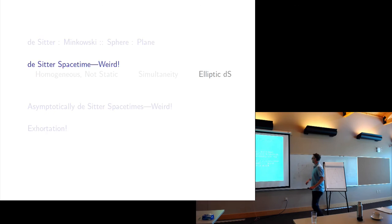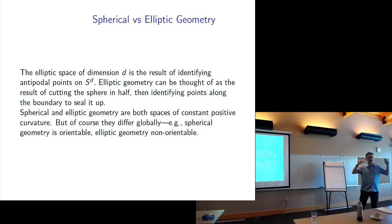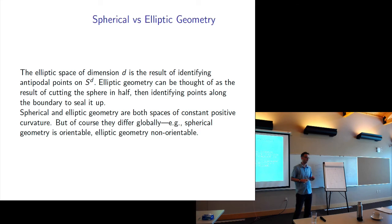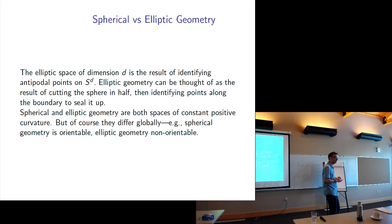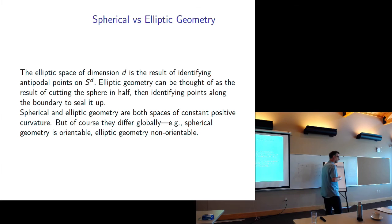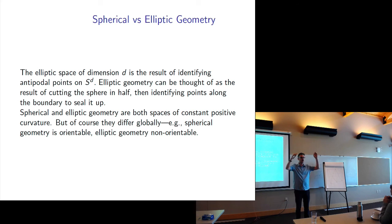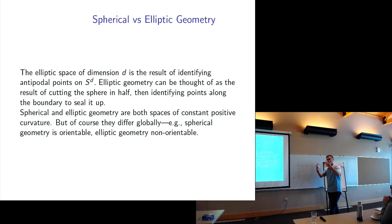Let's talk about elliptic de Sitter. Take an ordinary two-sphere, cut it in half, and identify opposite points on the boundary. That gives you a surface you can't picture because it's not orientable — locally it has the geometry of the sphere, it also has the rotation group as a symmetry group. Another way to picture this is to start with the sphere and go to a new space whose points are the lines in three-space passing through the origin — that's the same operation. If it has the metric, it's elliptic geometry; without the metric, it's projective geometry.